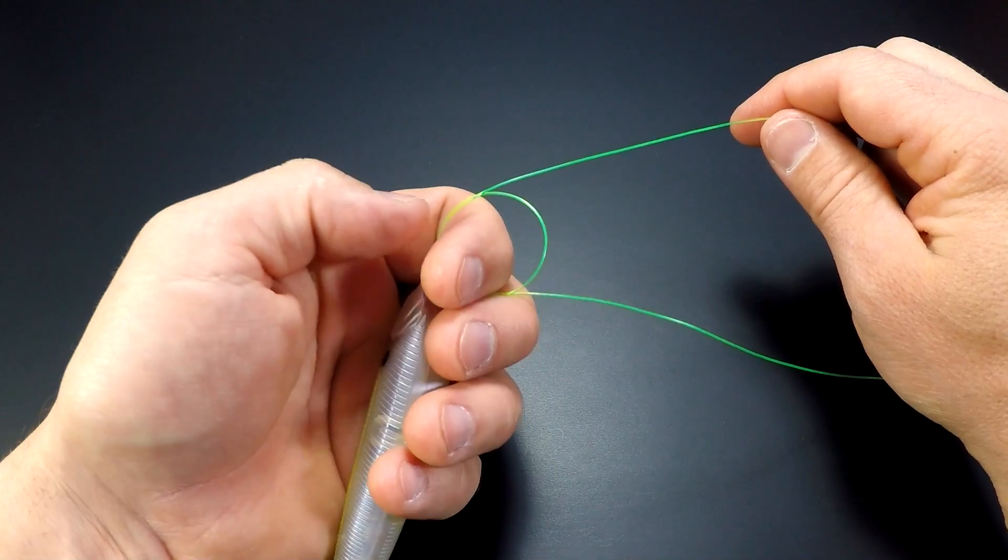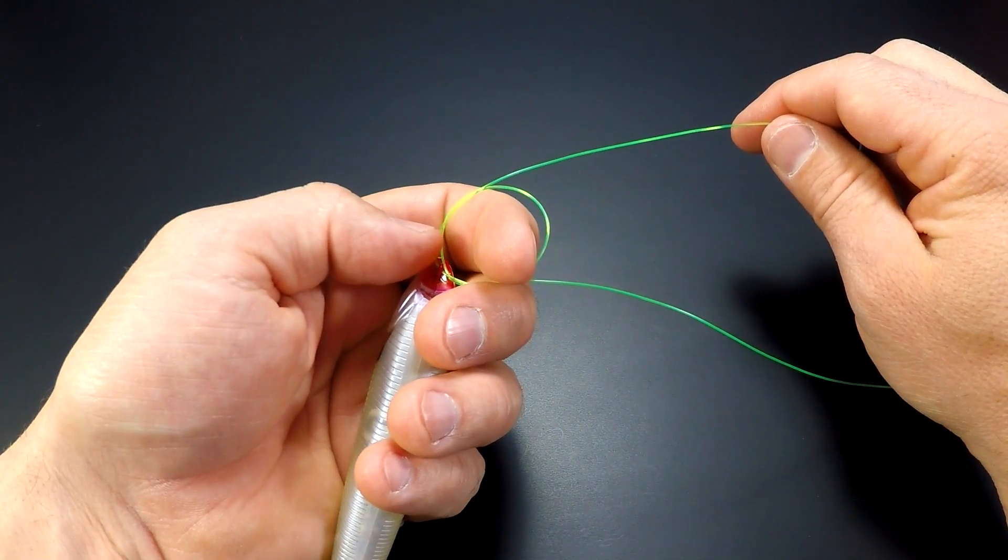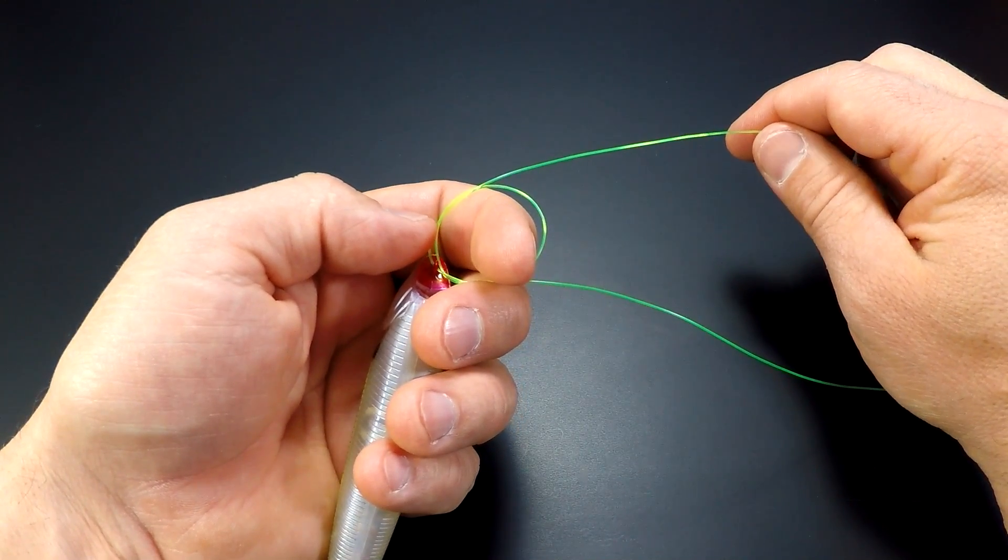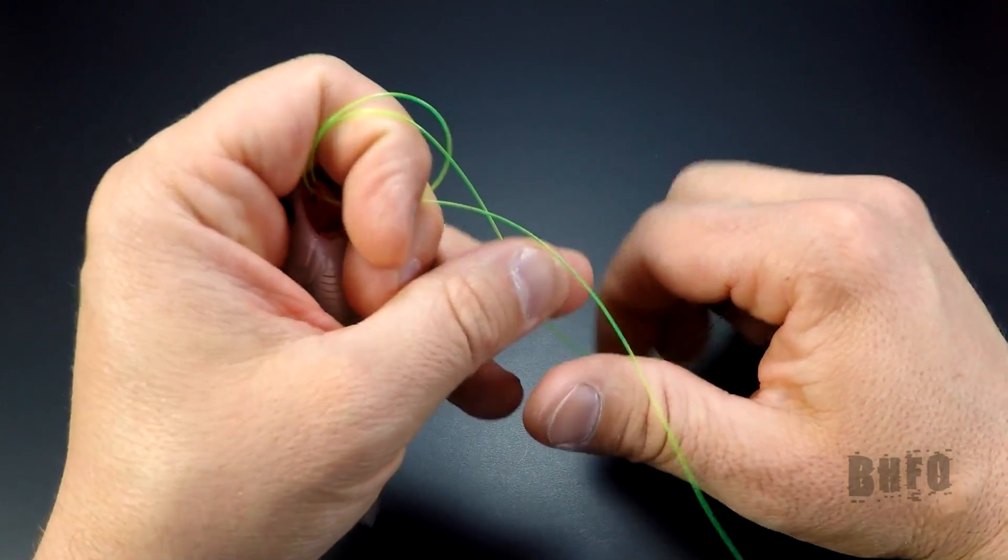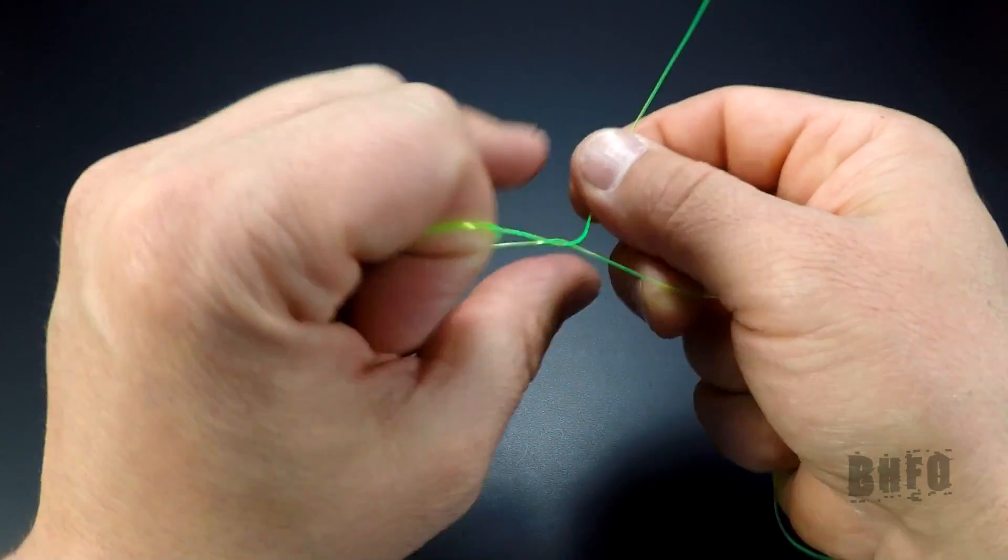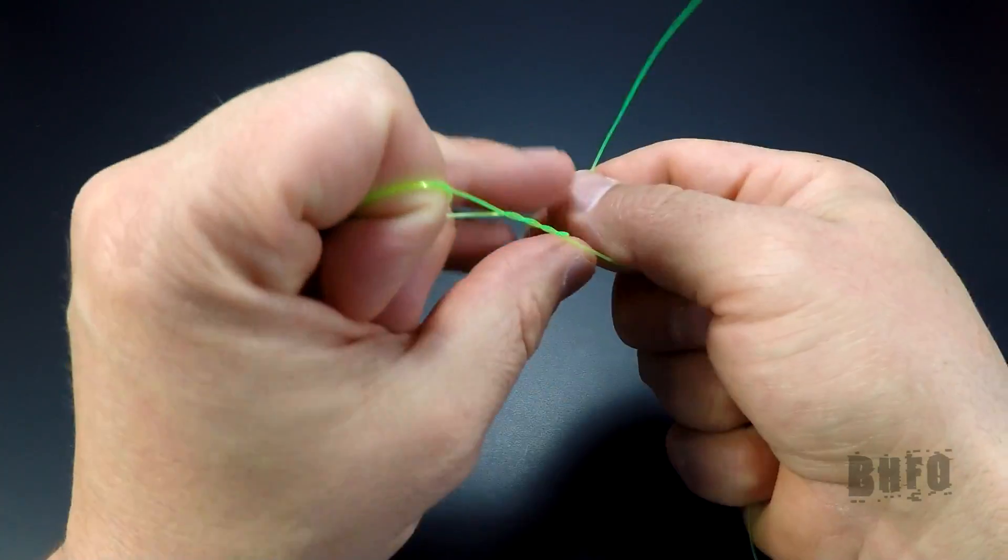Holding the lure, put your index finger through the overhand knot. Now, take the tag and wrap it 4 to 10 times around the main line. Find what works best for you.